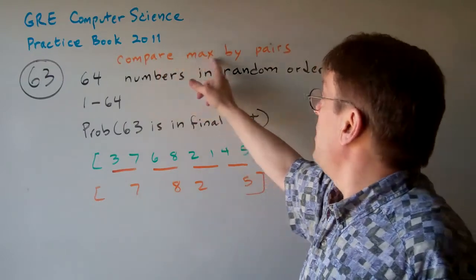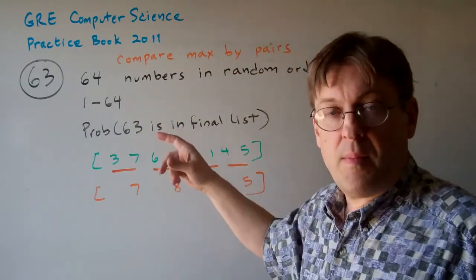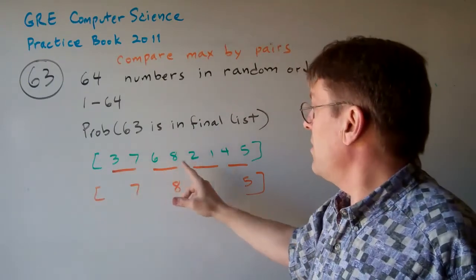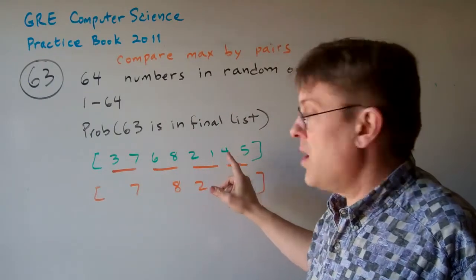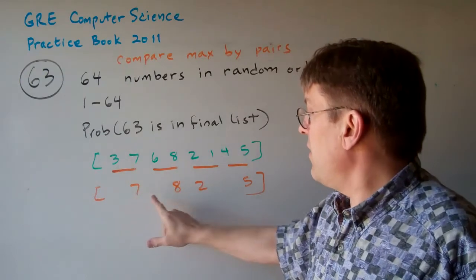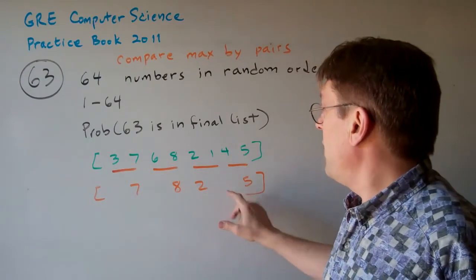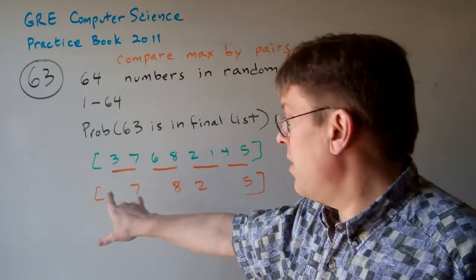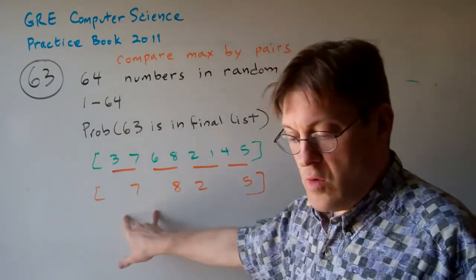For example, let's call this compare max by pairs. If it has the sequence 3, 7, 6, 8, 2, 1, 4, 5, it's going to reduce that down to 7, 8, 2, and 5, where it takes the pairwise maximum of each of these things and reduces it to this new list.